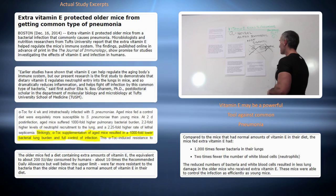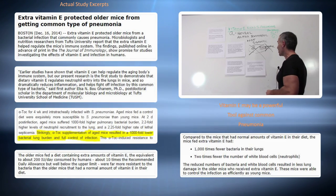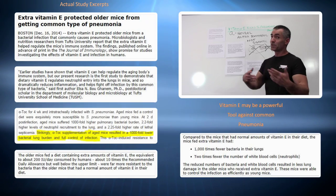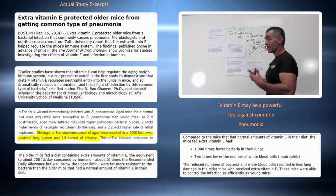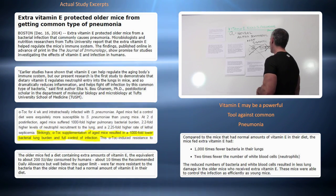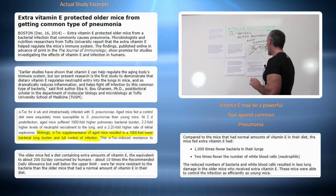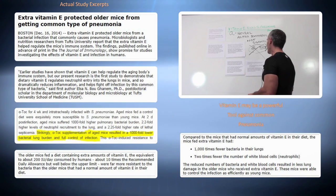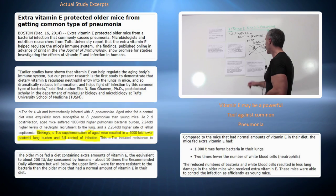The reduced numbers of bacteria and white blood cells resulted in less lung damage. They didn't need all those white blood cells because the vitamin E was protecting the lungs. In the older mice that received extra vitamin E, these mice were able to control the infection as efficiently as young mice.